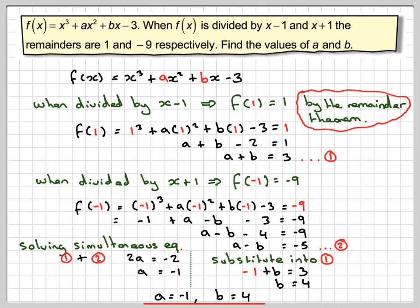If we were asked for what the actual polynomial would be, it would be x cubed minus x squared plus 4x minus 3. So this has been a video to show you how to find coefficients of a polynomial using the remainder theorem. I hope you've understood and I thank you very much for watching.